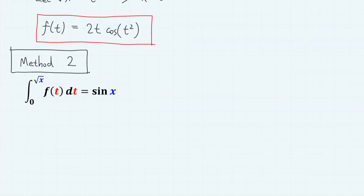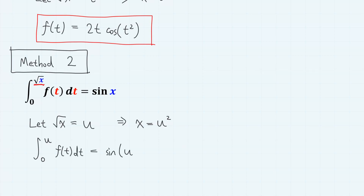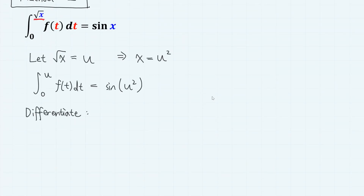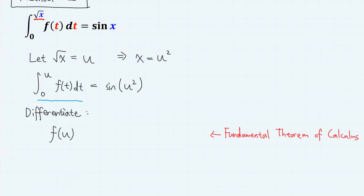For the second method, we simplify the √x part using substitution. If we let √x = u, then x = u², so we have the integral from 0 to u of f(t) dt equals sin(u²). Then we differentiate both sides with respect to u. The reason for substituting first is that it simplifies the differentiation on the left-hand side, which just gives f(u) — this is also called the fundamental theorem of calculus.